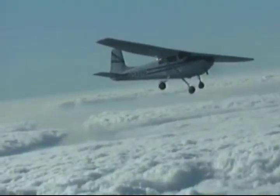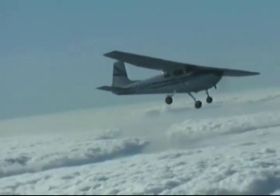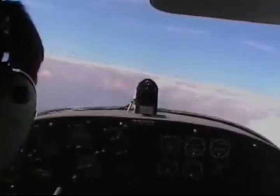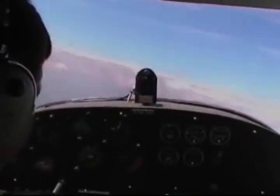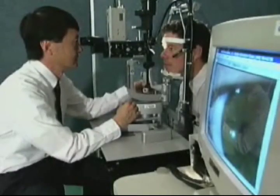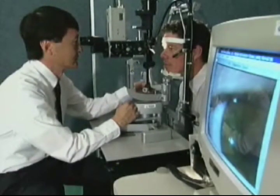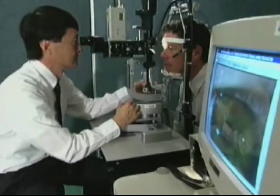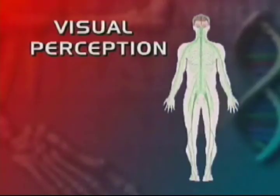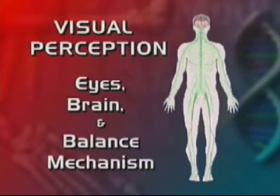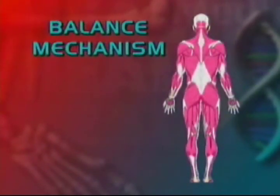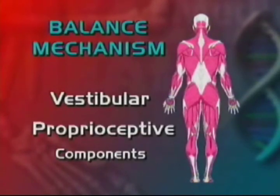Reviewing the module 'Vision in Aviation: To See or Not to See' will aid in your understanding of the concepts discussed in this module. Do you realize that even though you may have perfect vision, you may not be seeing the whole picture? Visual perception involves your eyes, brain, and balance mechanism. The balance mechanism and its vestibular and proprioceptive components were discussed in the first module on spatial disorientation.